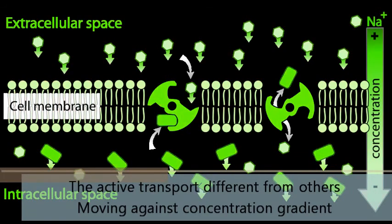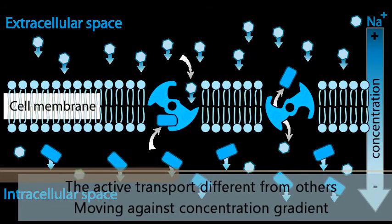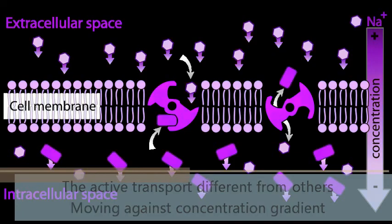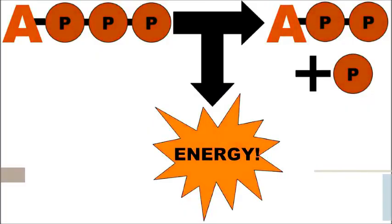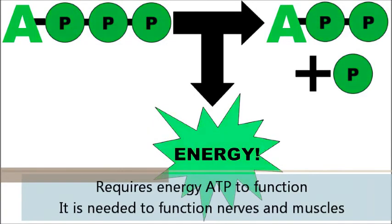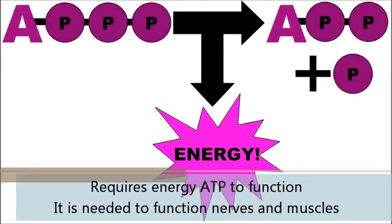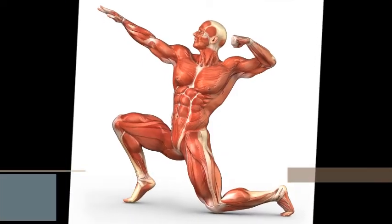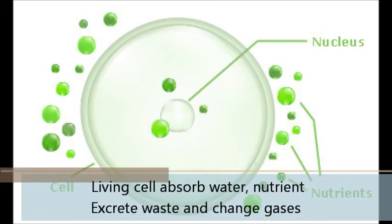The active transport differs from others. Moving against concentration gradient requires energy ATP to function. It is needed to function nerves and muscles.